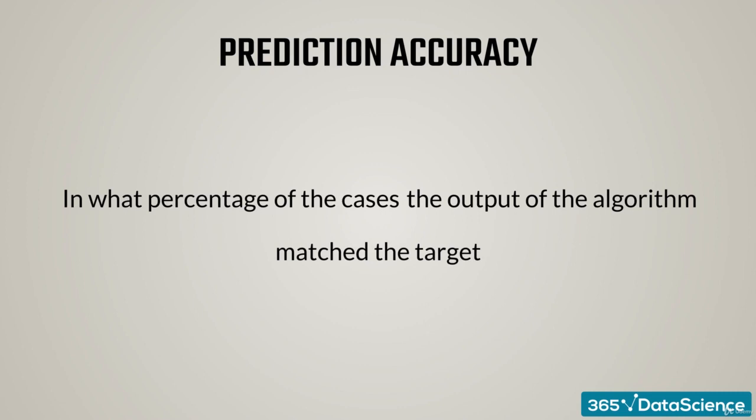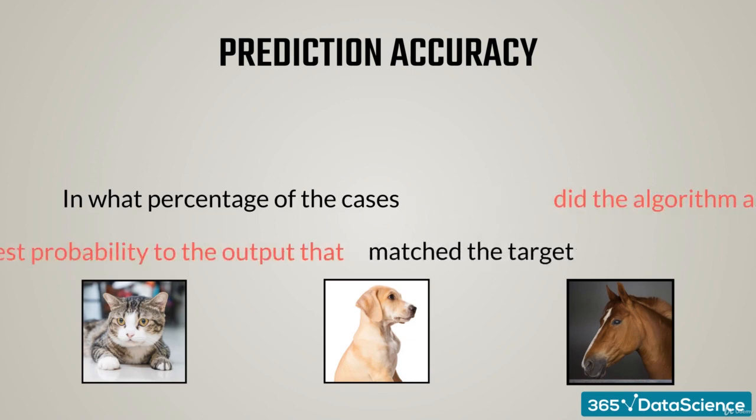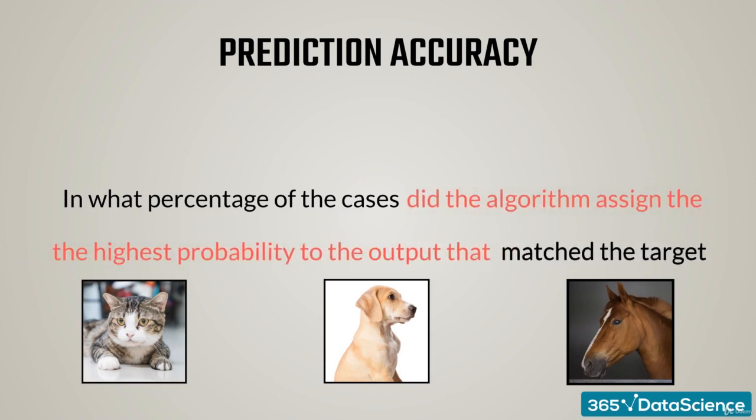So, for example, in our cat-dog-horse example, the sentence would change to: in what percentage of the cases did the algorithm assign the highest probability to the output that matched the target?